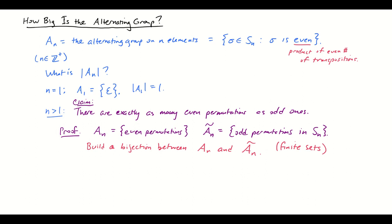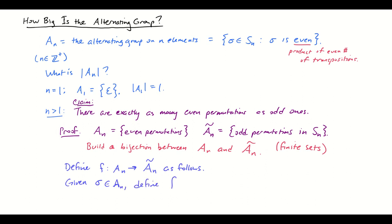The bijection is a little bit unnatural — there's nothing particularly elegant about it, and I'm going to have to make something up to create it. We're going to define a function f from A sub n to A sub n tilde as follows: given sigma in A sub n — an even permutation — I'm going to define f of sigma to be the transposition (1,2) multiplied on the left by sigma. The reason I can do this is because n is greater than 1; if n weren't greater than 1, I couldn't even write this transposition down, because it wouldn't exist.